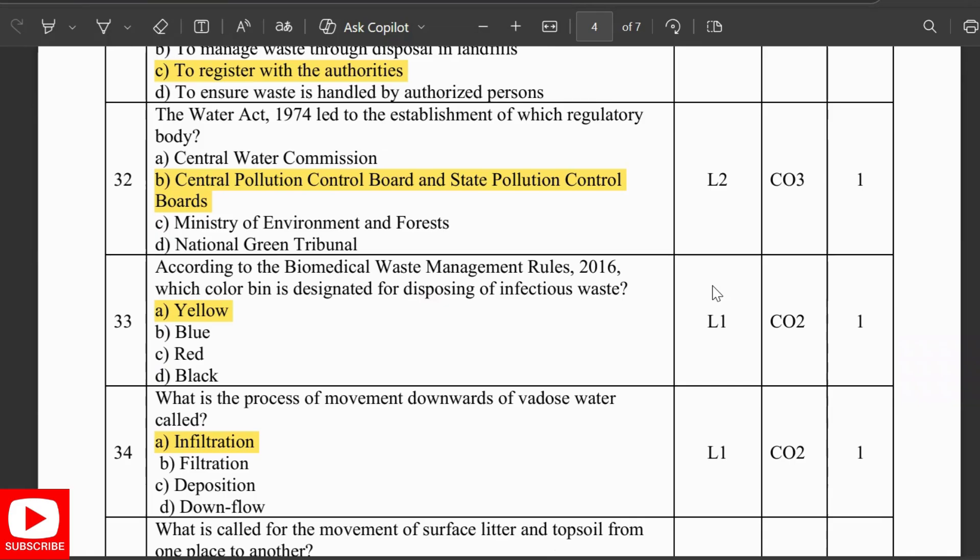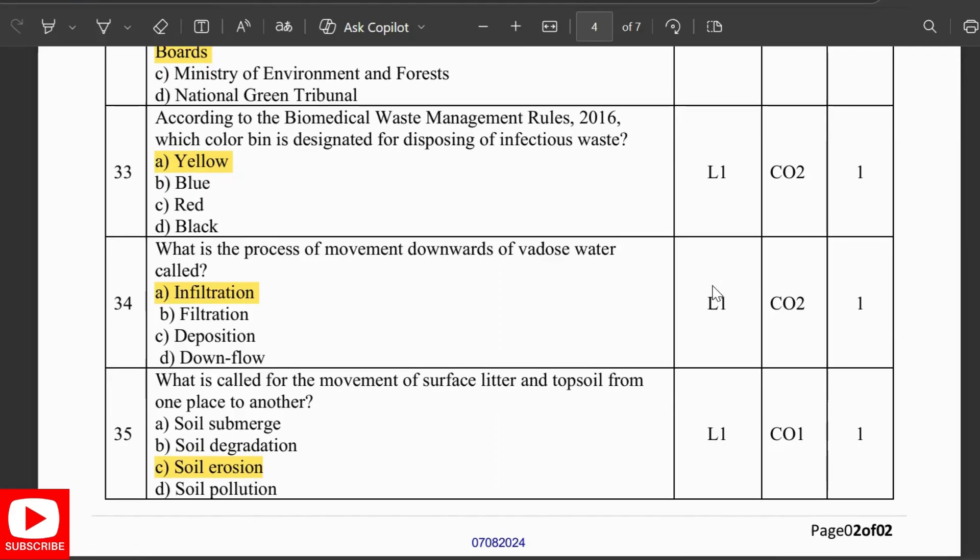According to the Biomedical Waste Management Rules 2016, which color bin is designated for disposing infectious waste? It is yellow. What is the purpose of moving downwards of water called? It is infiltration. Which is called for the movement of surface litter and topsoil from one place to another? It is soil erosion.